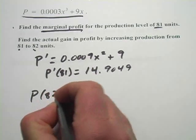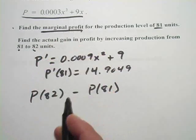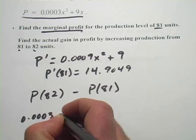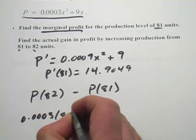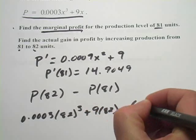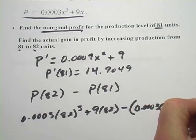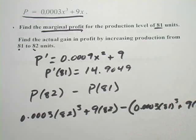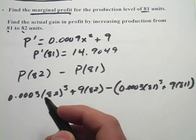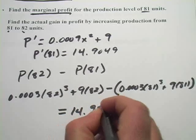So p of 82 minus p of 81, and we're using this profit function up here. So let's see, p of 82 will be 0.0003 times 82 cubed plus 9 times 82 minus 0.0003 times 81 cubed plus 9 times 81. So that's the math we have to do here. That's p of 82 minus p of 81, and let's see, we should get 14.98, something close to that.